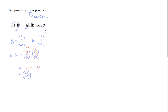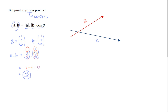So what does the dot product really do? One of the most important uses is finding the angle between two vectors. Let's say I have vector A in red and a blue vector B, such that these two vectors are not parallel and therefore they form an angle of theta between them. The dot product is basically a formula that can help you find the value of theta.